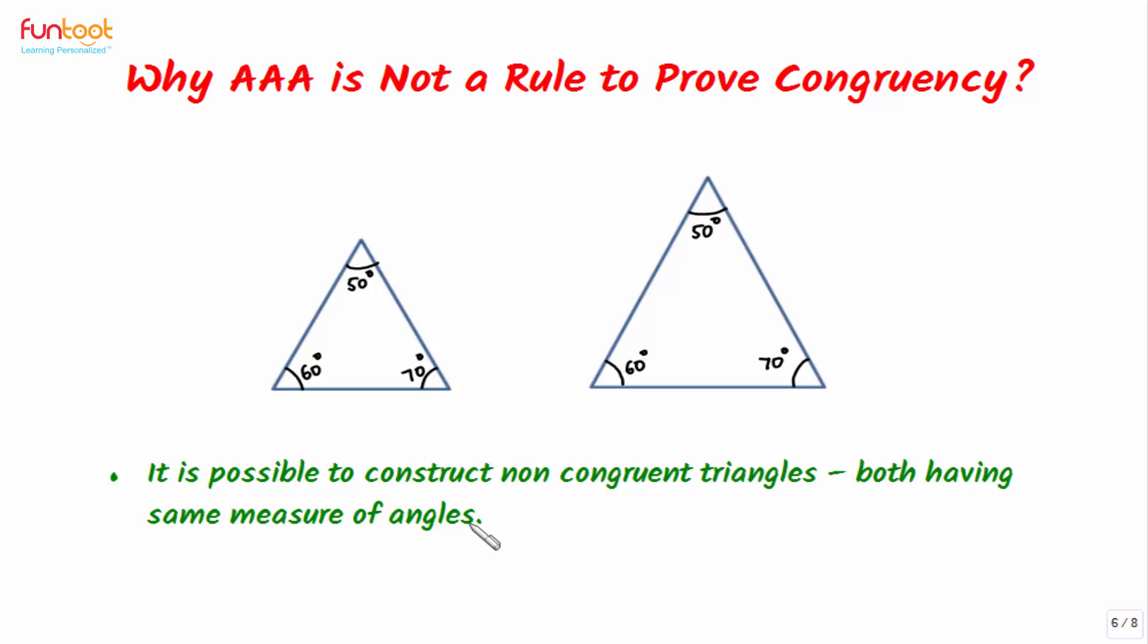Let's summarize what we have learned here. It is possible to construct non-congruent triangles both having the same measure of angles.